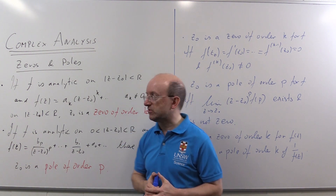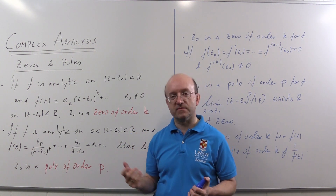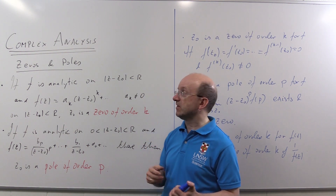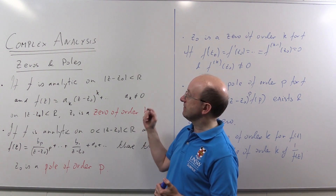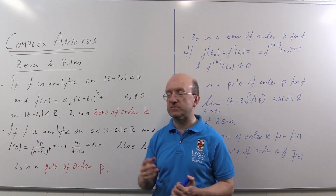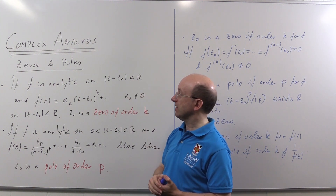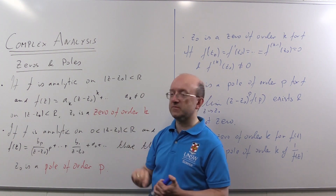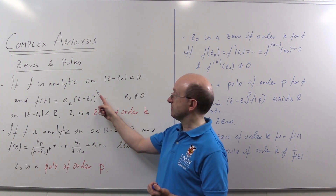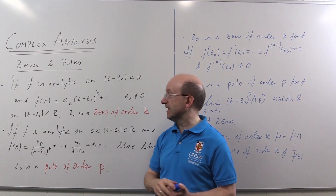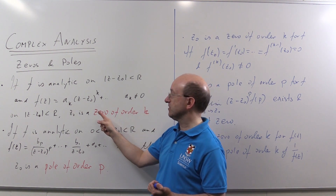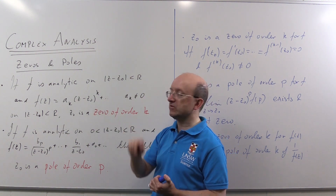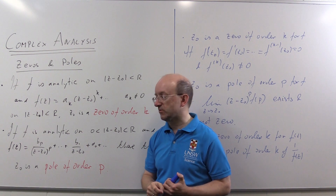To begin with I'm going to talk a bit about zeros of analytic functions and their close relative, the pole. Here we have a definition: if f is analytic on some disk and we write the function as a power series, and the first non-zero term has a power k here — this term a_k is not zero — then we refer to z₀ as a zero of order k. So when the first non-zero term is power k, that's a zero of order k.